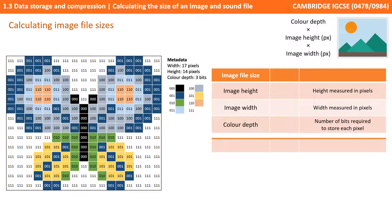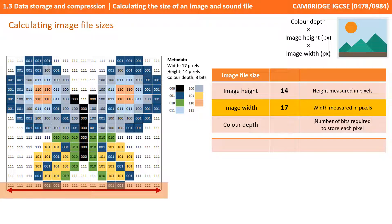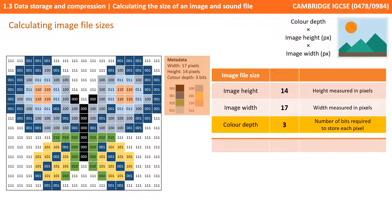Now let's look at image files. The first thing we need to do is work out the height of the image in pixels — that's 14 here. We then need the width of the image in pixels — that's 17. Finally, we need to know the colour depth: that's the number of bits it takes to store each pixel.